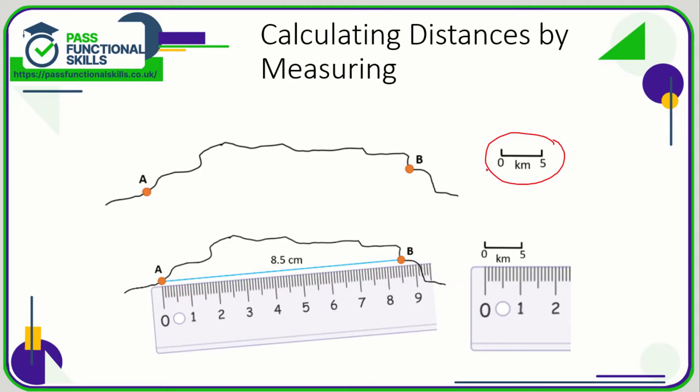So what you need to do first of all is measure using your ruler the key here. So 5km is 1cm. Now we're going to take our ruler and measure the distance between A and B on the map, and we can see it's 8.5cm. So if 1cm equals 5km, then 8.5cm is going to be 5km multiplied by 8.5, and 5 times 8.5 is 42.5km. So A to B is 42.5km.